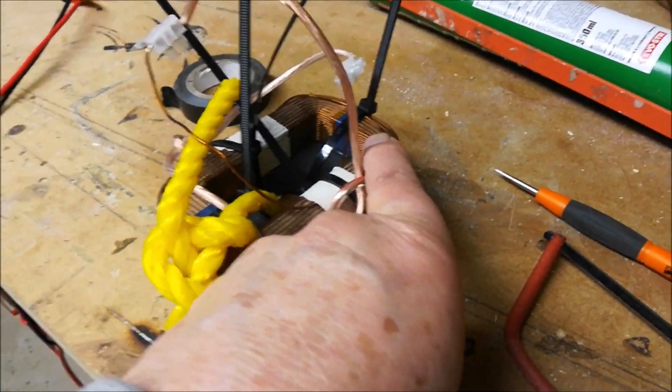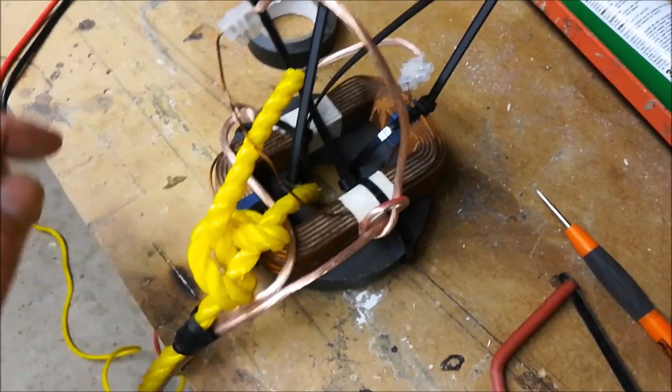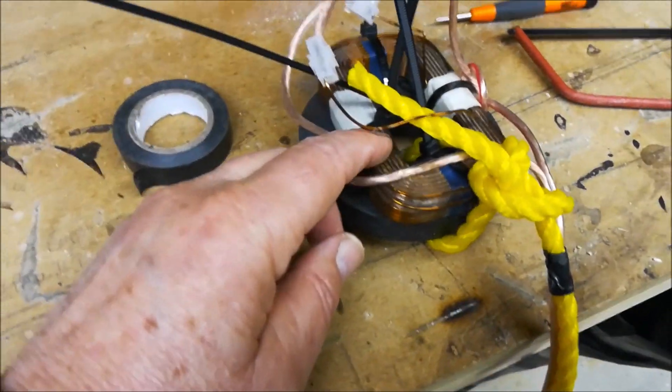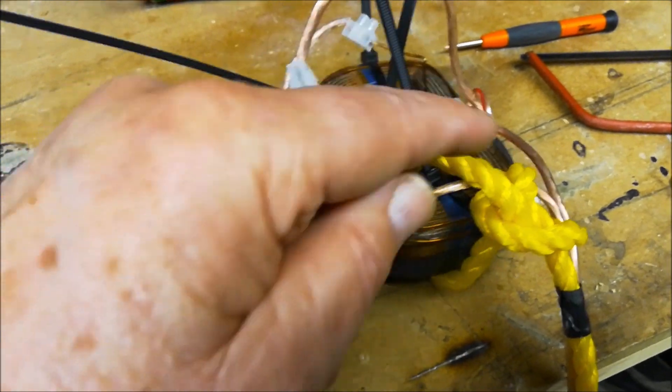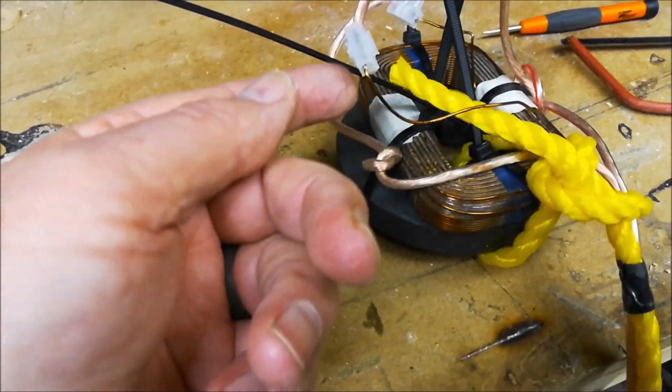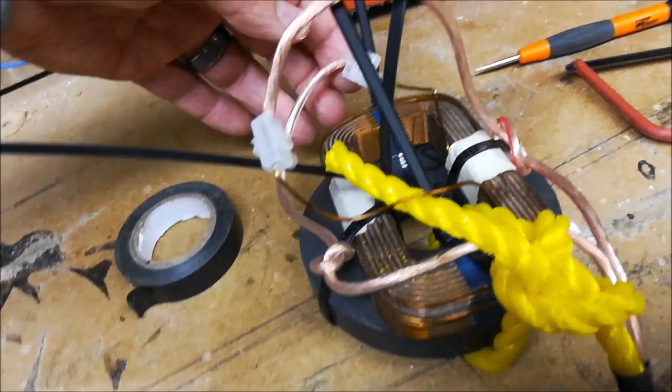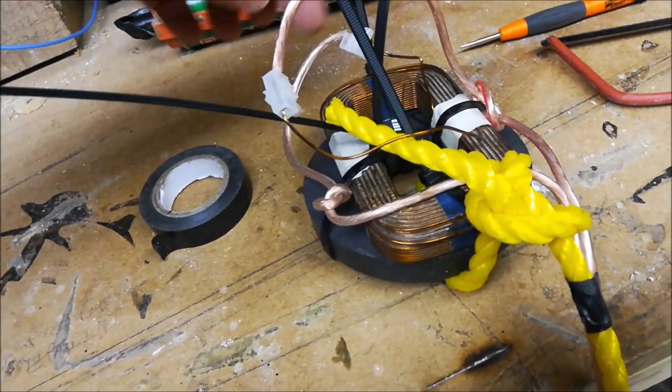I've got a copper coil which is strapped onto the magnet. And then what I've done is I've taken a wire from the copper coil. Well, there's two ends to the copper coil, and I've connected here and here to the copper coil.